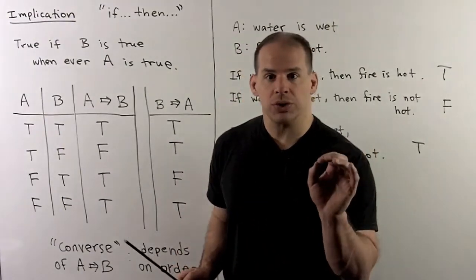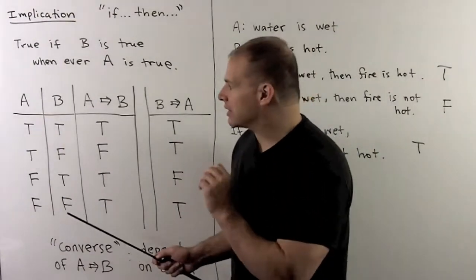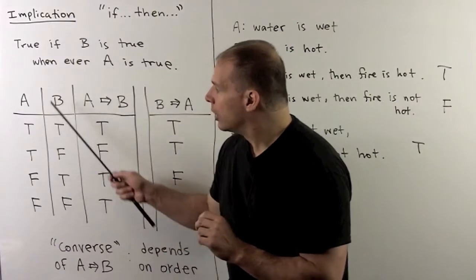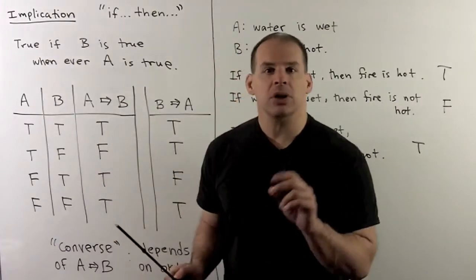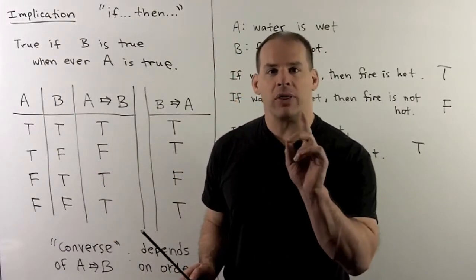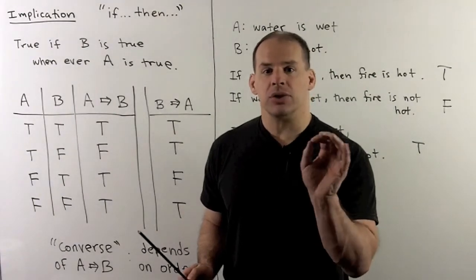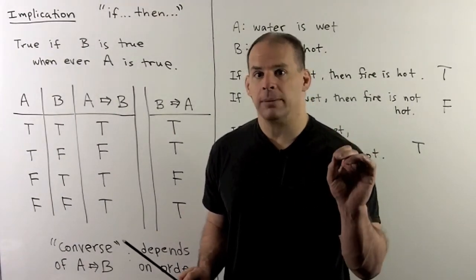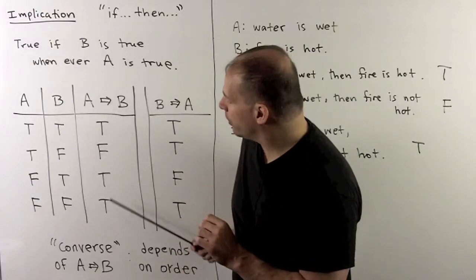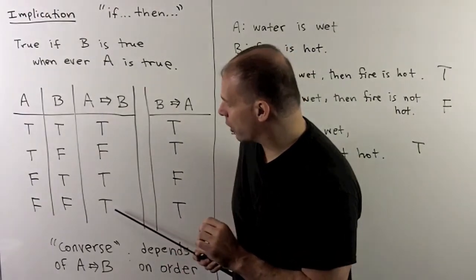For the last two rows, what's happening when we check to see whether A is true or not? Well, A is false, so it doesn't matter whether B is true or not. So, this is going to be vacuously true because there's nothing to check. So, we'll have true in both of these rows.